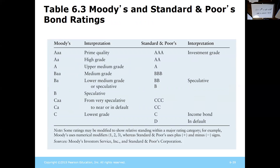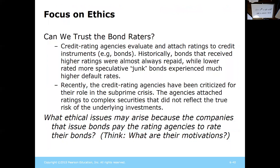Bond ratings can range from triple-A down to C for Moody's, or triple-A down to D for Standard and Poor's, where D means you're basically in default. As you get to triple-A, the risk premium goes down; as you go down toward C or D, the risk premium goes up, requiring higher interest rates from those companies paying interest.